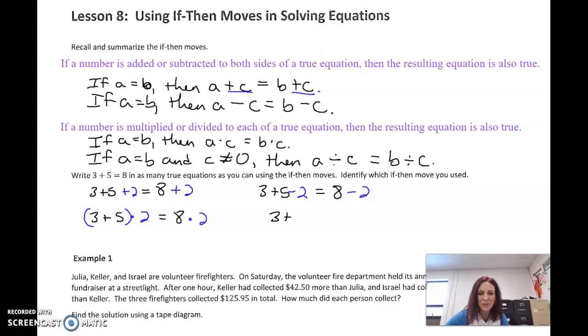And one more. What if I take 3 plus 5, and now I'm going to write division how I normally write it, divided by 2. Is that going to equal 8 divided by 2? Yeah, 3 plus 5 is 8, 8 divided by 2 is 4, 8 divided by 2 is 4.